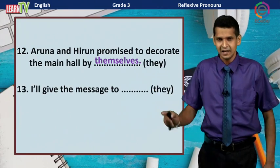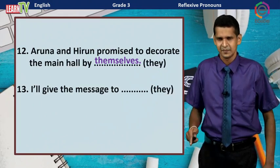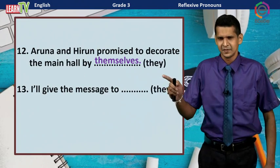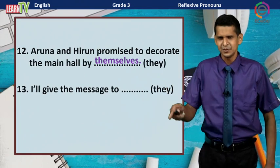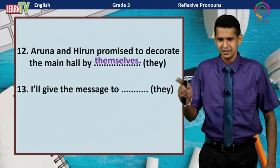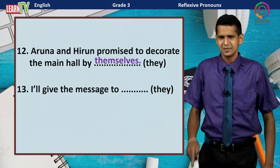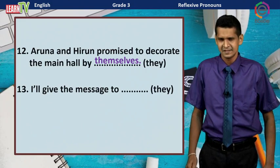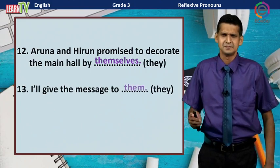Number thirteen: I will give the message to ___. 'They' is the subject pronoun, so the object pronoun is 'them.' I will give the message to them.